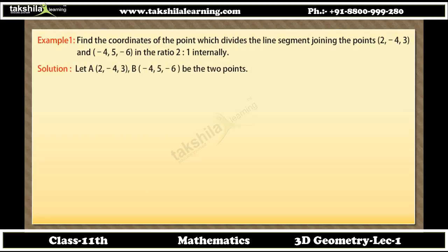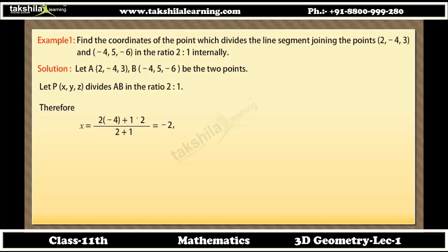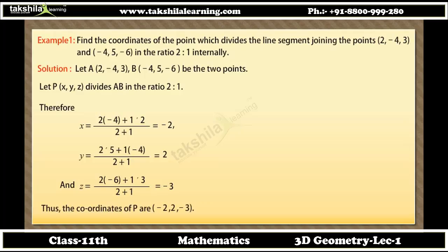Solution: Let A = (2, −4, 3) and B = (−4, 5, −6) be the two points. Let P(X, Y, Z) divide AB in the ratio 2:1. Therefore, X = [2×(−4) + 1×2]/(2 + 1) = −2. Y = 2, and Z = [2×(−6) + 1×3]/(2 + 1) = −3. Thus, the coordinates of P are (−2, 2, −3).